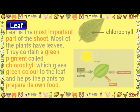Leaf: The leaf is the most important part of the shoot. Most plants have leaves. They contain a green pigment called chlorophyll, which gives the green color to the leaf and helps the plant to prepare its own food.